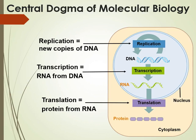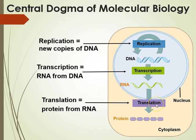So three steps: replication, transcription, translation. Replication is DNA molecules making more DNA molecules — that's what we've been talking about with the cell cycle. Transcription is individual genes on our DNA molecules being transcribed into RNA molecules, so transcription is DNA to RNA. And then translation is taking the message on the RNA molecule and translating it into proteins. So: replication is DNA to DNA, transcription is DNA to RNA, and translation is RNA to protein.